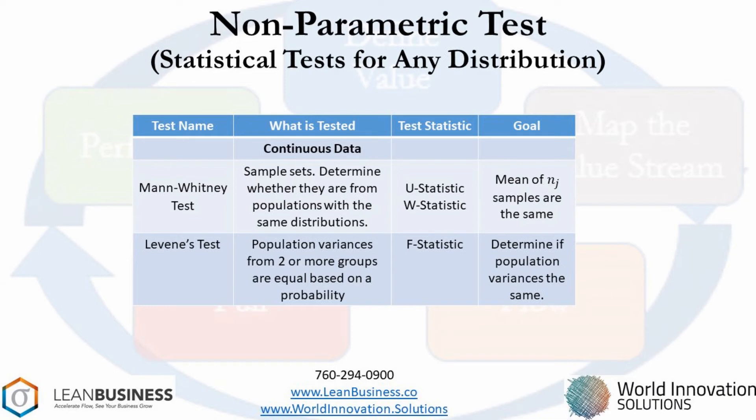Levine's test is used for variances, like Mann-Whitney is used for means. An example could be testing whether a new drug impacts wakefulness. You run a randomized test with a placebo and the drug, then measure wakefulness and use Levine's test to determine whether the drug had an impact on the variation of wakefulness or not.